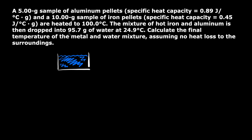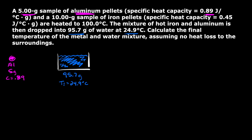The beaker contains 95.7 grams of water with an initial temperature of 24.9 degrees Celsius. For the aluminum, I'm going to label it as Al with a mass of 5 grams. Its specific heat C is equal to 0.89 joules per gram per degree Celsius, and its initial temperature is 100 degrees Celsius.